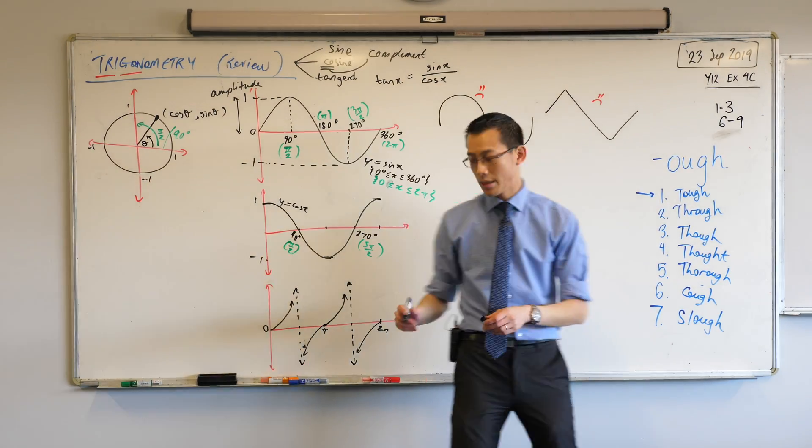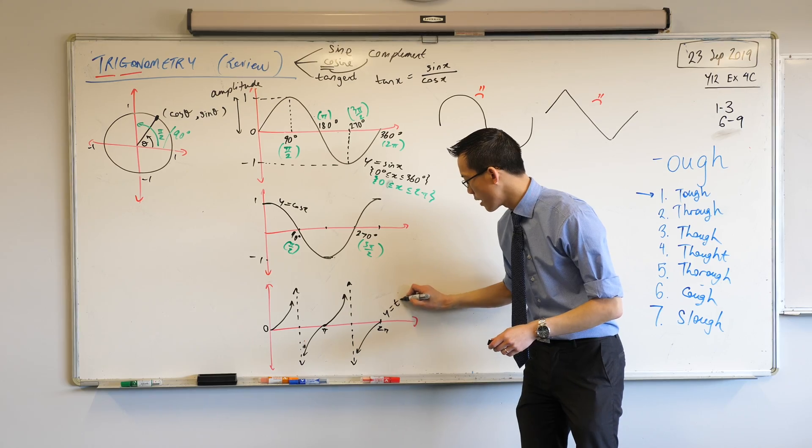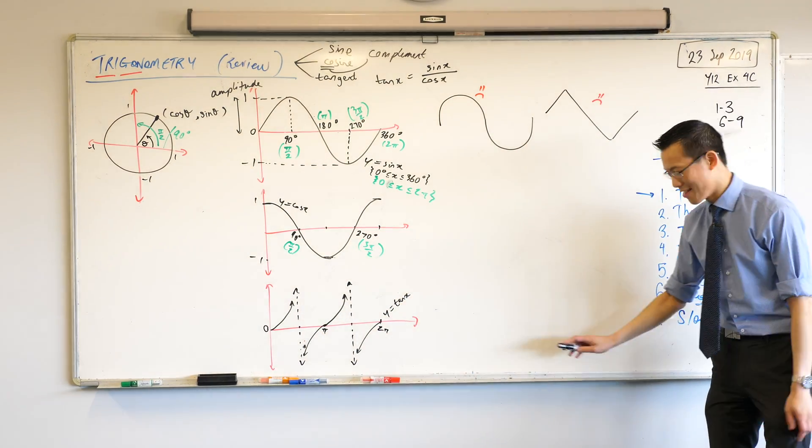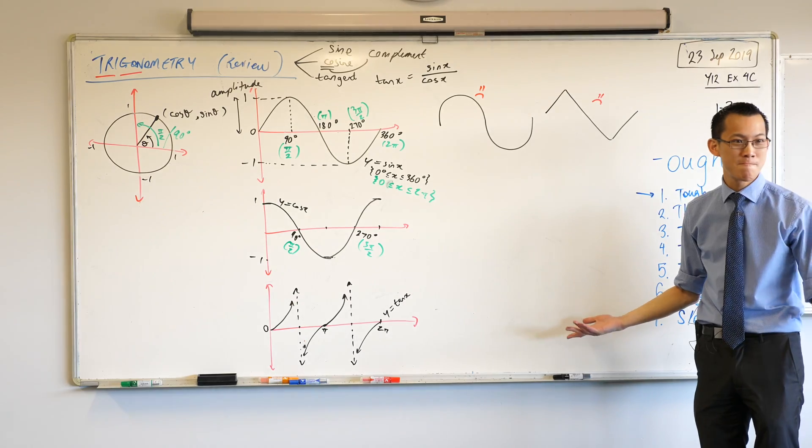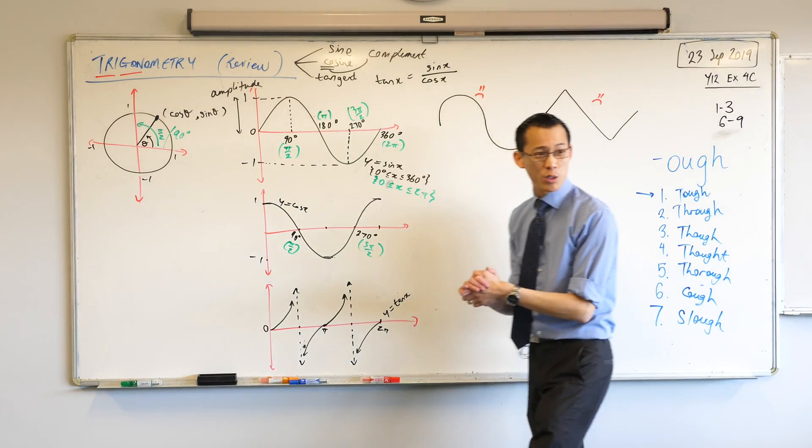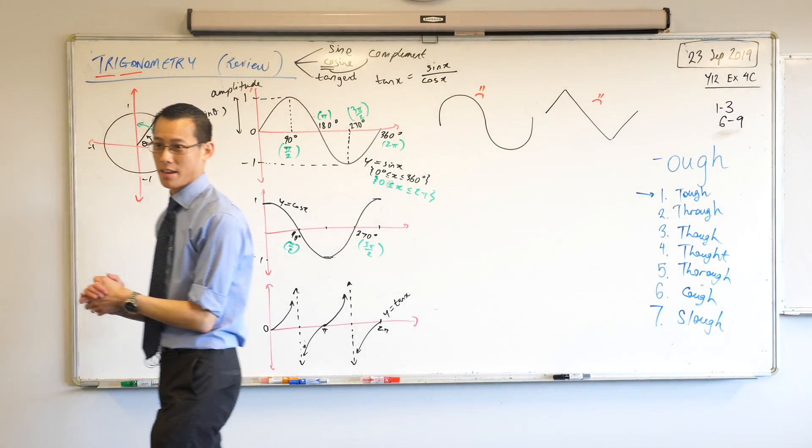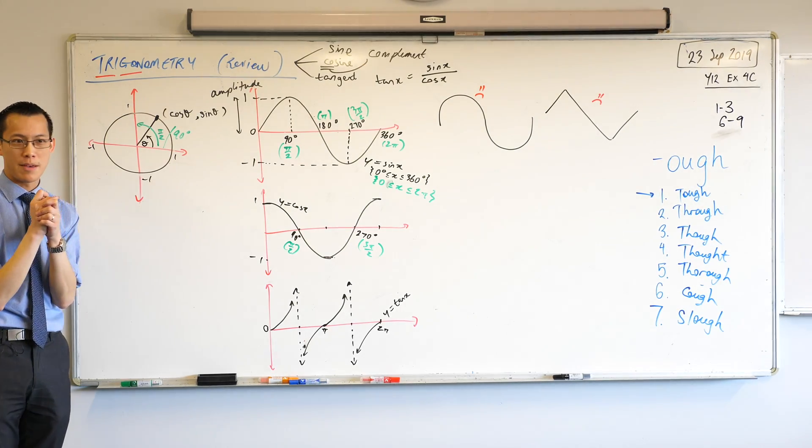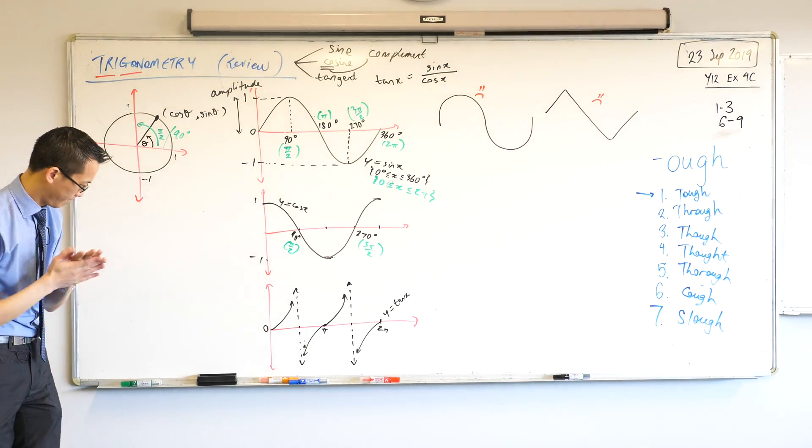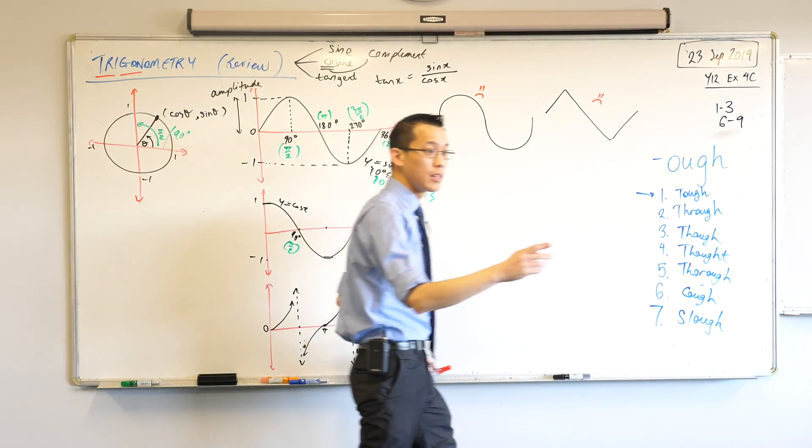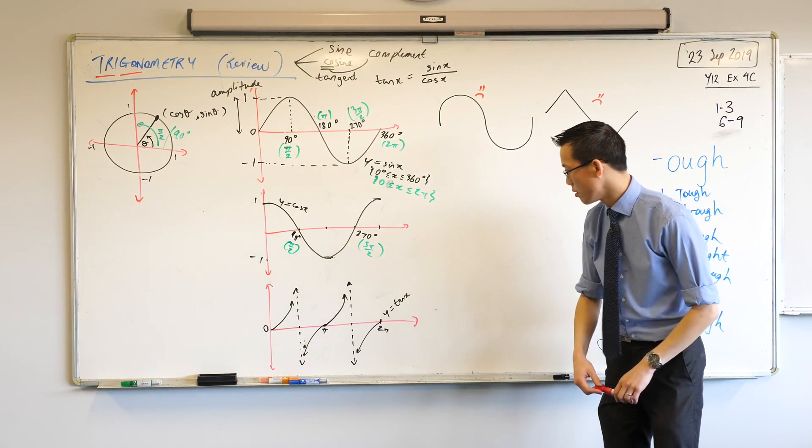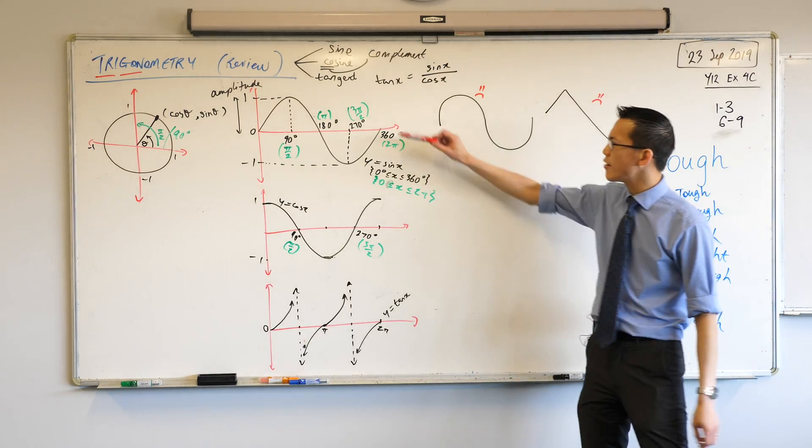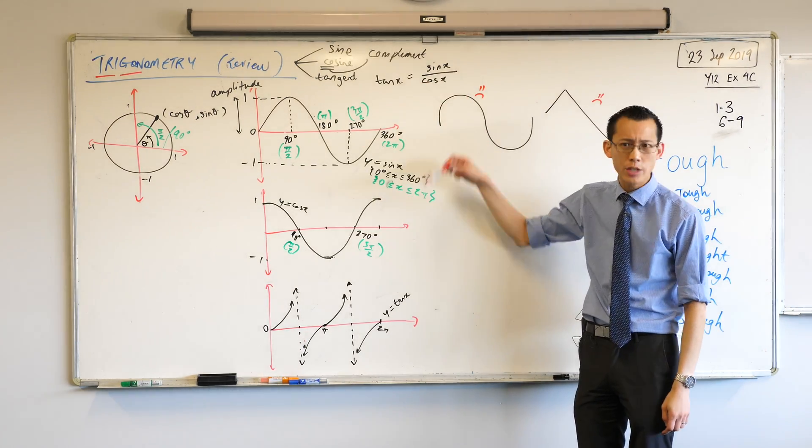Are you guys happy with that tan graph? Y equals tan x. Happy? I think it looks good too, but I think it's missing something. Can anyone think of what this might be missing? The one and the negative one. Why did I have one and negative one on these graphs? Why did we put them in?